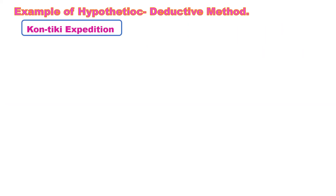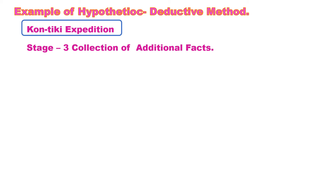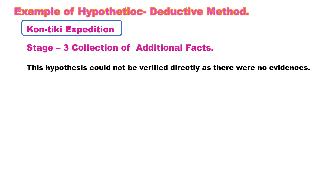The third stage is the collection of additional facts. The sociologists could not find any evidence in support of the hypothesis, so it could not be directly verified. It appeared impossible that thousands of years ago these primitive people could have undertaken such a journey of several months, so they had to dispute it.